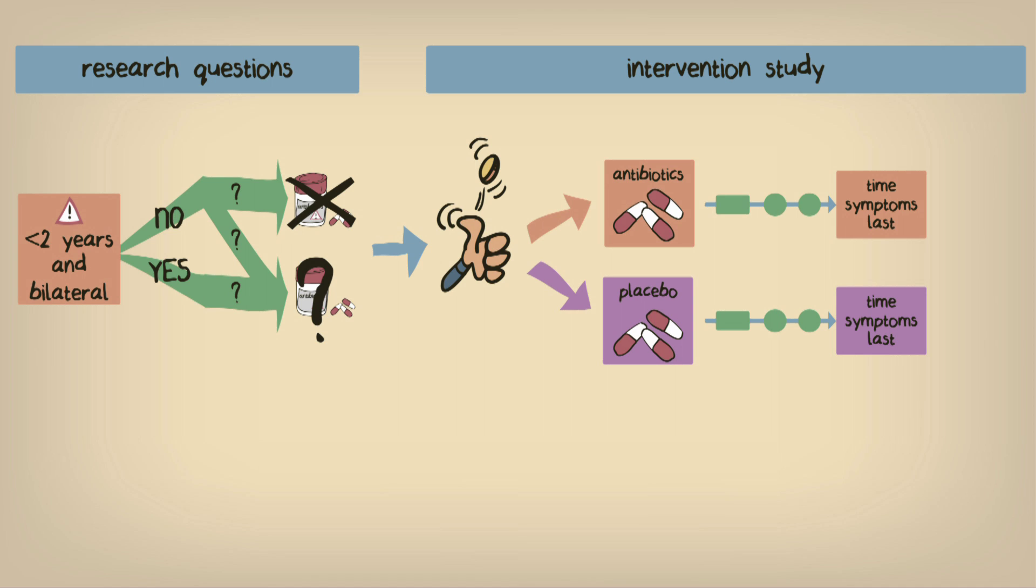We may want to assess the effect of treatment within subgroups, as suggested by the result of our prognostic research, to see whether treatment is more effective in younger children with bilateral inflammation. The evidence that we gather in order to address these questions may bring us closer to a resolution for our overall concern regarding the overprescription of antibiotics in these children.